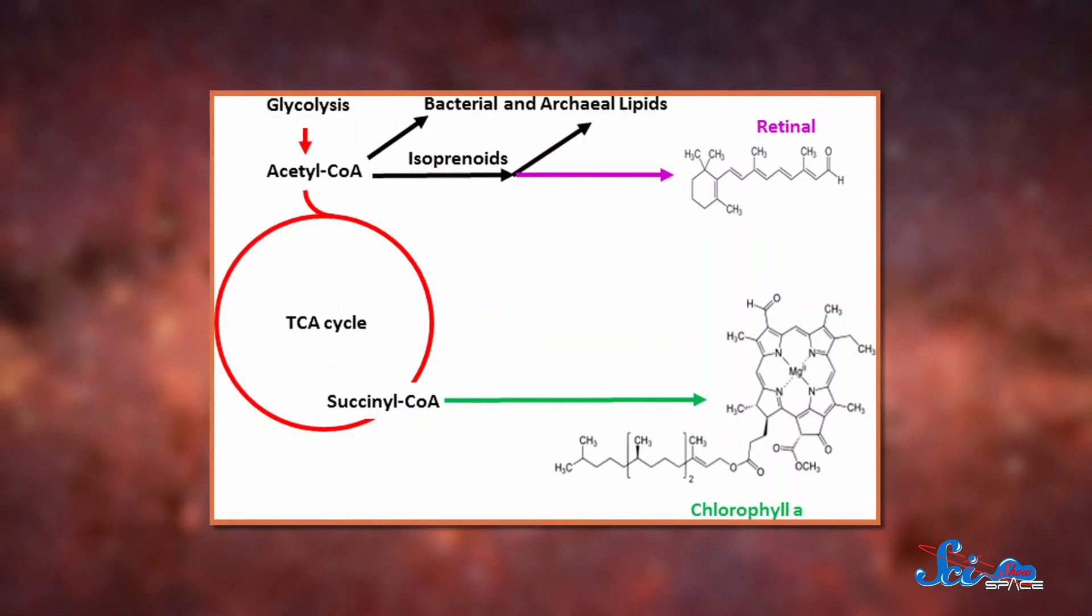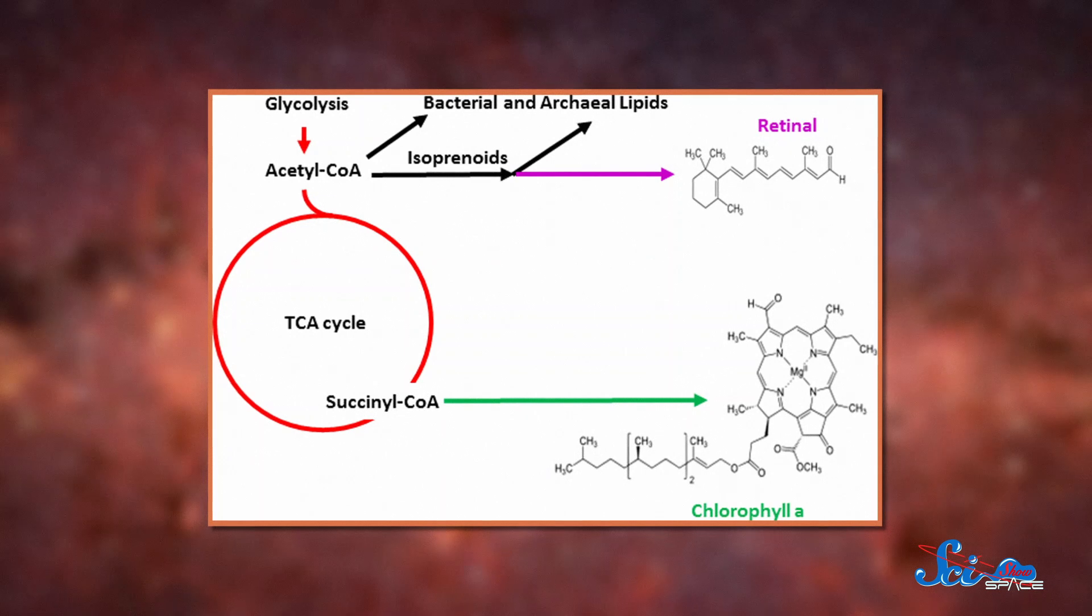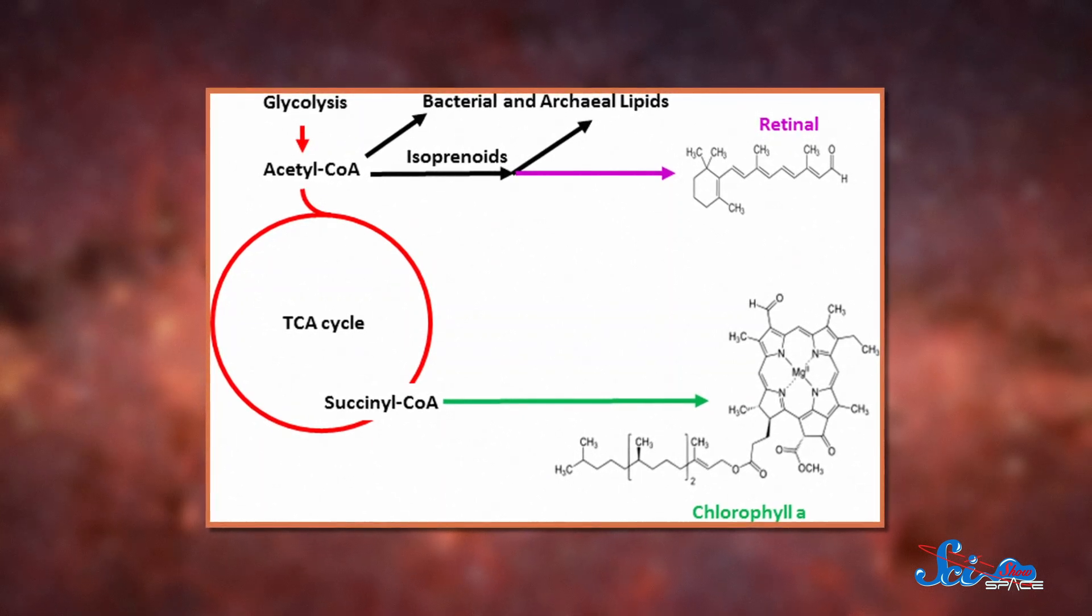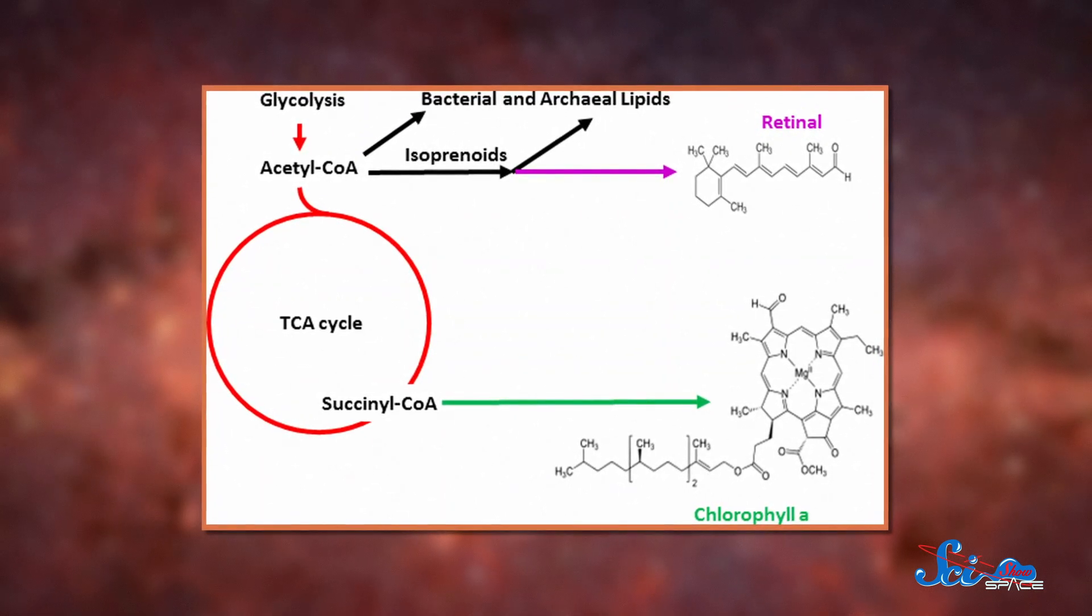On a molecular level, the process of using retinol to capture energy from sunlight is relatively simple, and organisms could make retinol using systems they already had. So, it's possible that, for a while, the Earth was dominated by purple organisms.